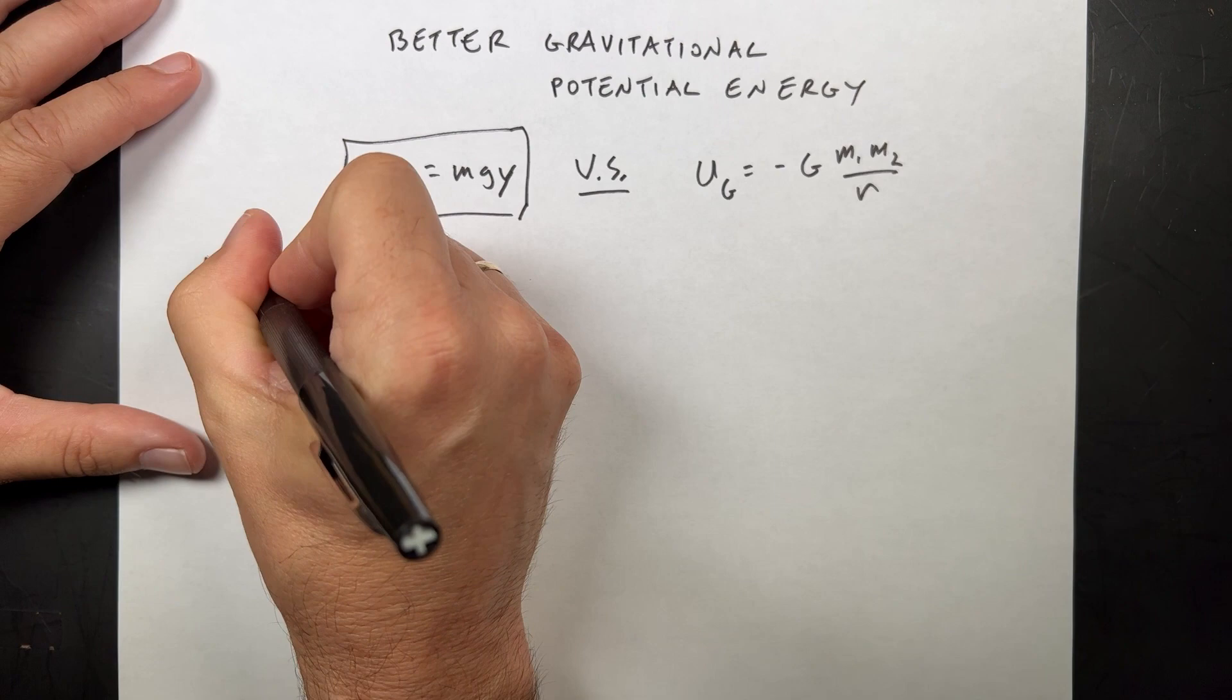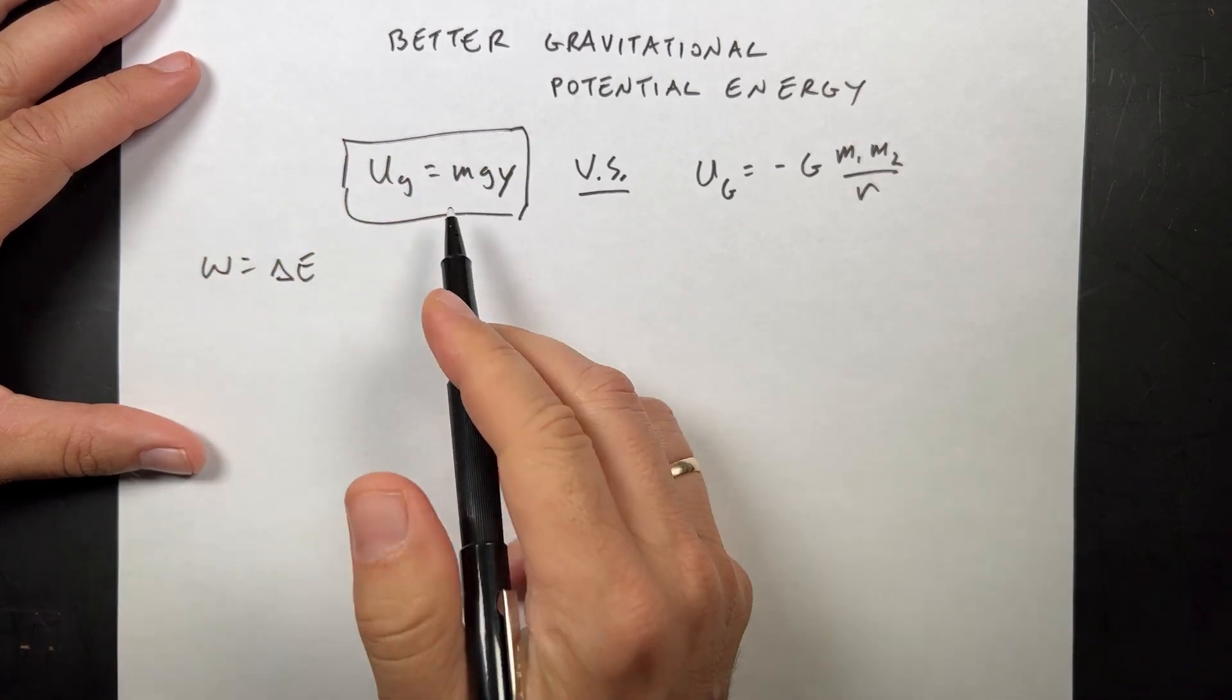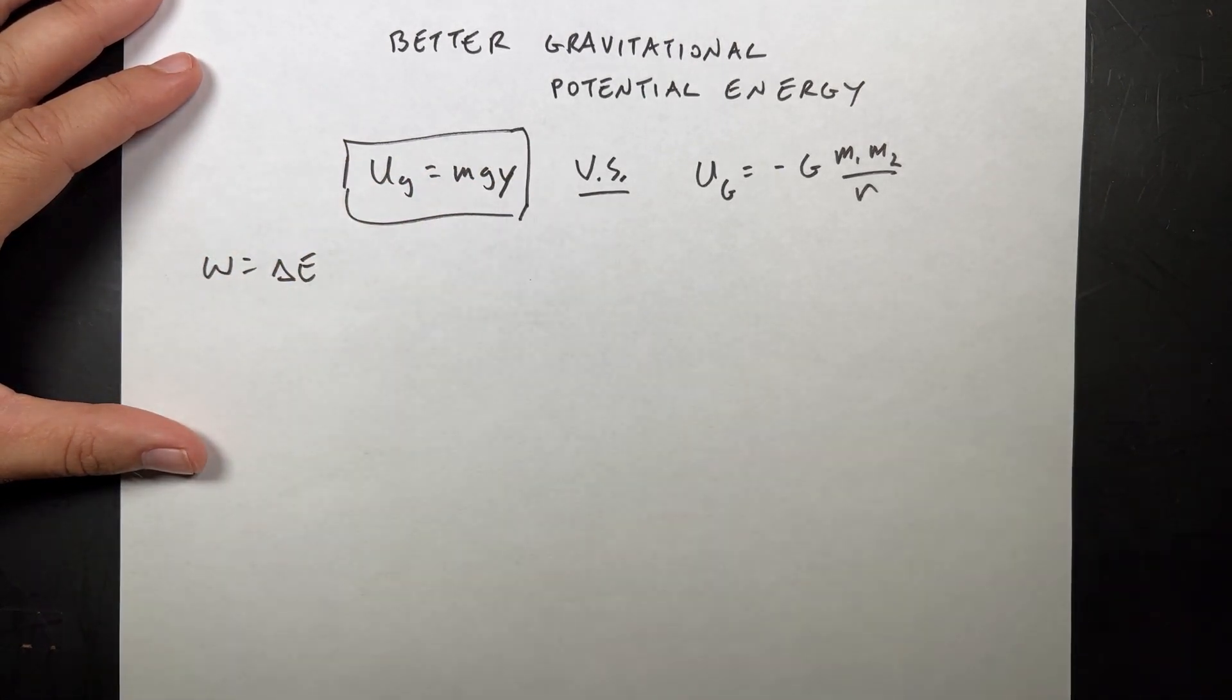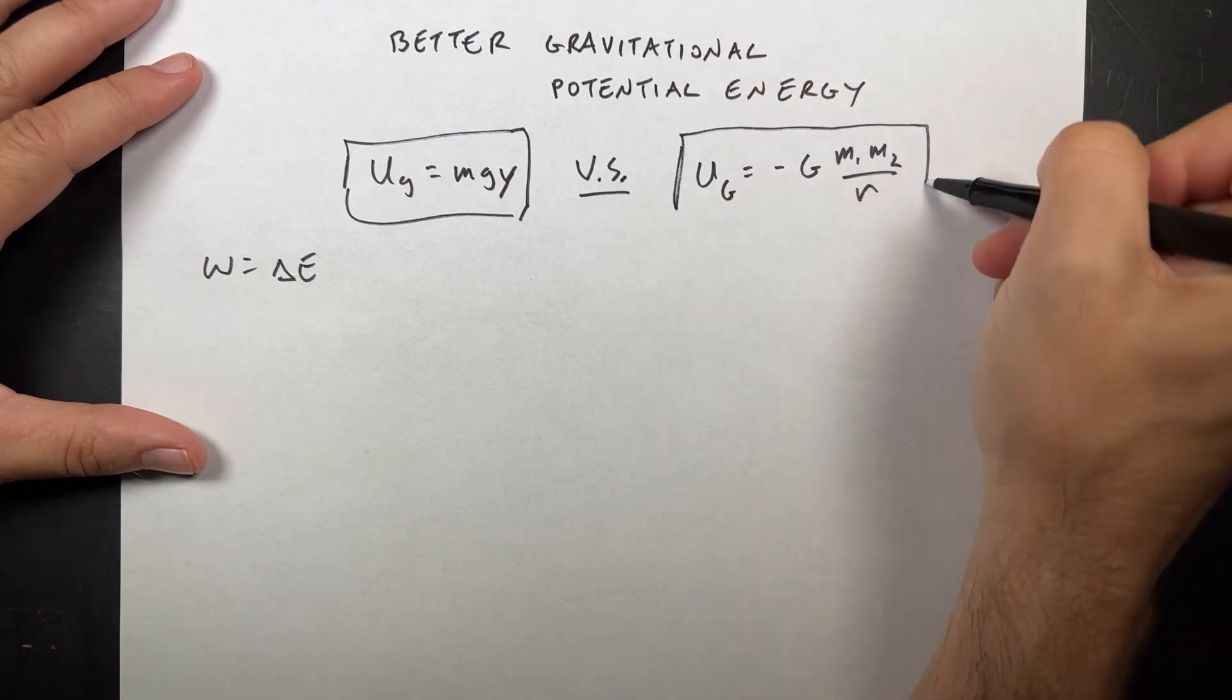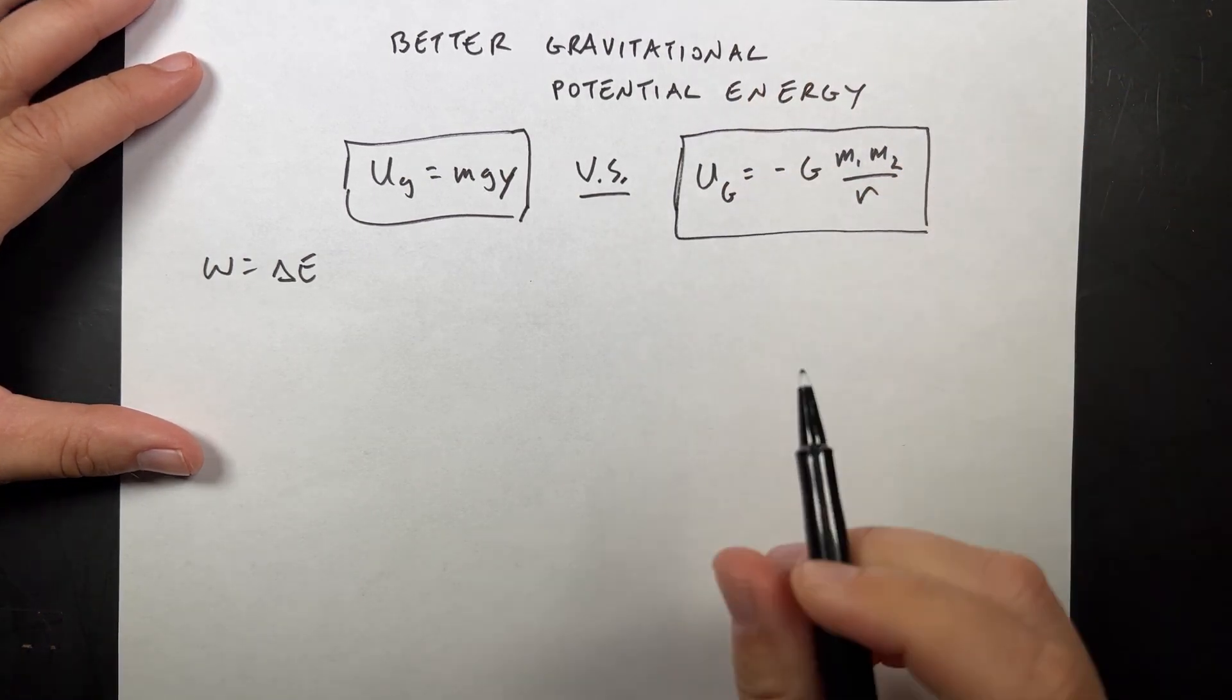Of course, we're using this: work is the change in energy, and then that's one of the energies. But there's also this one right here - you have this expression for gravitational potential energy.